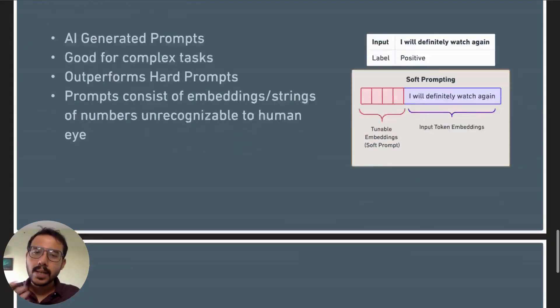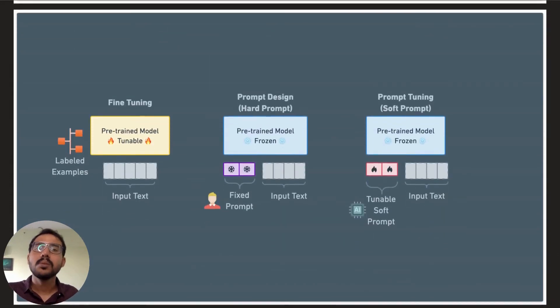So to summarize, there are three main approaches to specialize a pre-trained model: fine-tuning, prompt engineering or hard prompting, and finally prompt tuning.